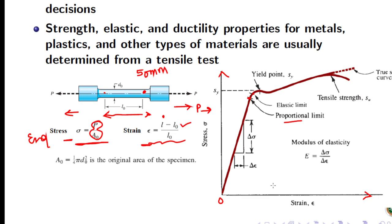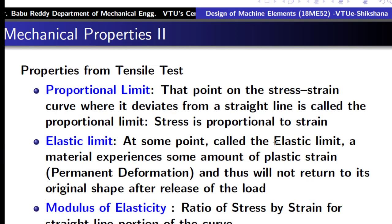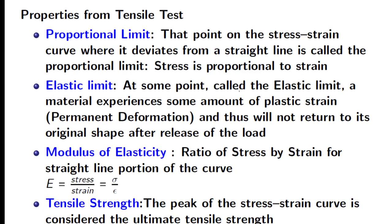After the proportional limit, at a short distance away, we get what is known as the elastic limit. The elastic limit is the limit up to which the stress and strain are elastic — meaning if you remove the load, the deformation will return to its original position. Most of the time these two are not easily differentiated and are commonly treated as the same, though there is a minor difference: at the elastic limit, deformations are not permanent.